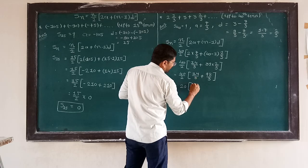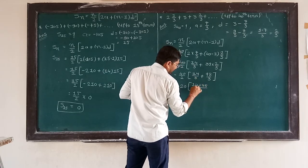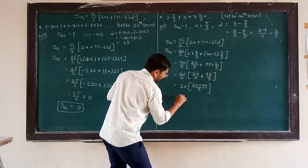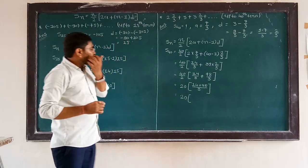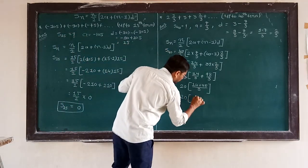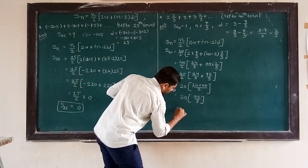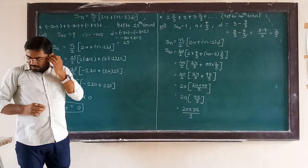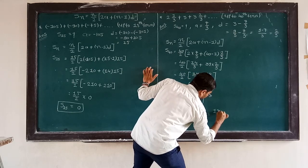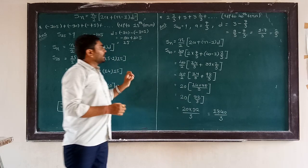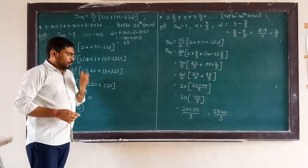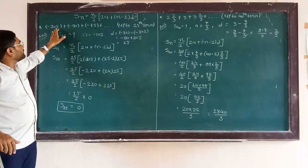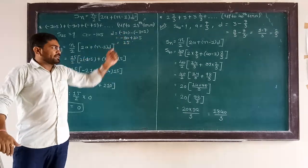Now we have 20 times the bracket 14 plus 78 upon 3, because both terms share denominator 3. So 14 plus 78 equals 92 upon 3. Then 20 into 92 upon 3 gives S40 equal to 1840 upon 3. So both sums are found: the first sum is in minus mode and the second is a fractional sum.